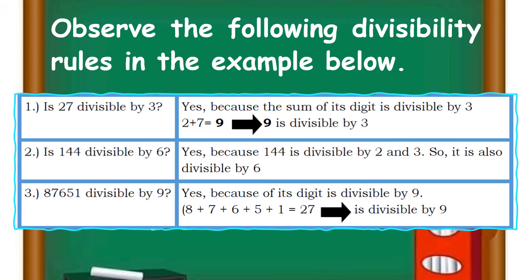Now let's observe the following divisibility rules in the examples below. Is 27 divisible by 3? The answer is yes, because the sum of its digits is divisible by 3. Number 2: Is 144 divisible by 6? Yes, because 144 is divisible by both 2 and 3, so it is also divisible by 6. For number 3, we have 87,651. Is it divisible by 9? The answer is yes, because the sum of its digits is divisible by 9.